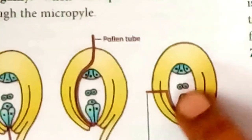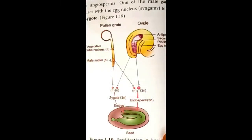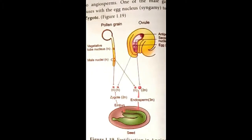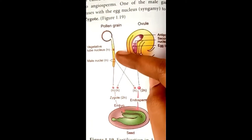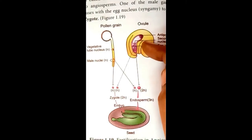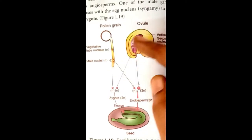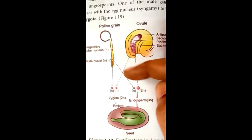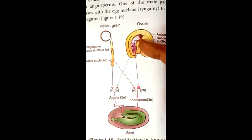Fertilization in angiosperms is called double fertilization and triple fusion. Navashin and Guignard in 1898 and 1899 observed this double fertilization in plants Lilium and Fritillaria. They found that both male gametes released from the male gametophyte are involved in fertilization, each fertilizing a different component of the embryo sac. One male gamete fuses with the egg nucleus — this is called syngamy.